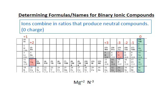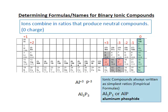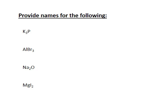Putting magnesium and nitrogen together using the crisscross method gives the formula Mg₃N₂, named magnesium nitride. However, the crisscross method can sometimes mislead you — for example, with aluminum (plus three) and phosphorus (minus three), you might write Al₃P₃, but ionic compounds must be written in the simplest ratio, called an empirical formula. The correct formula for aluminum phosphide is simply AlP.